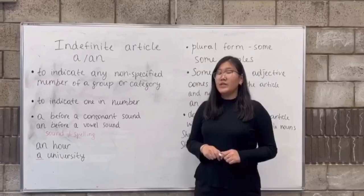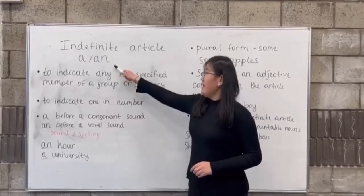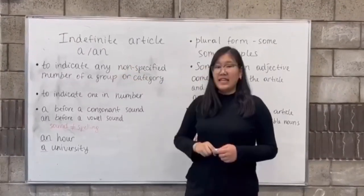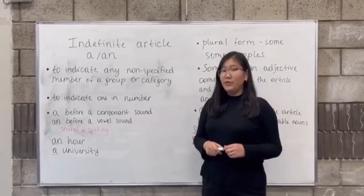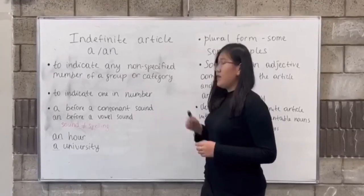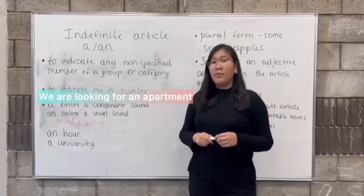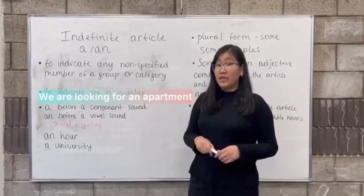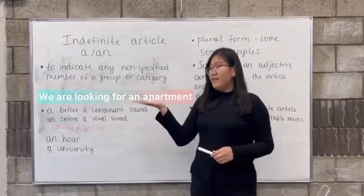We use the indefinite articles 'a' and 'an' to indicate any non-specified member of a group or category. For example: 'We are looking for an apartment.' Here we see the article 'an' used before 'apartment.'